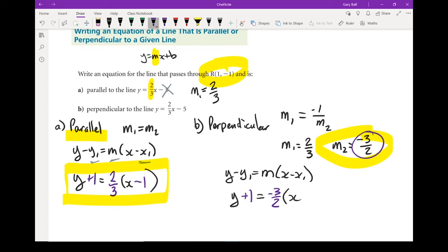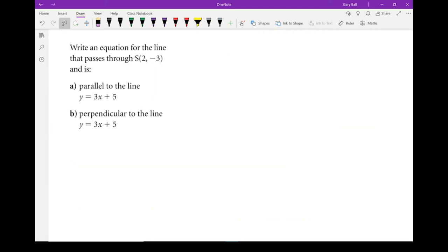x still stays in there. And x1 is the opposite sign, whatever my x1 is, minus 1. There is the equation of the perpendicular line. Let's do that one more time.